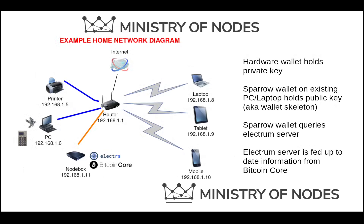Just going back to our diagram here — you'll see our normal PC or laptop that we're going to be sitting at. You'll have a Sparrow wallet installed, and you'll also have some form of hardware wallet, hopefully. That hardware wallet holds the private key, so it sits there. The public key will sit on your computer and it holds that wallet skeleton file, so to speak, and it'll be installed within Sparrow.